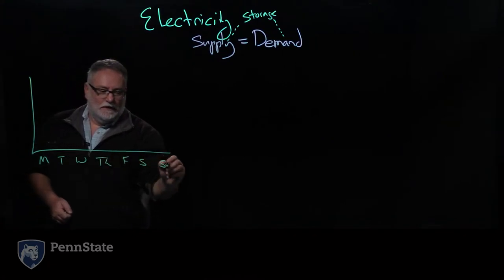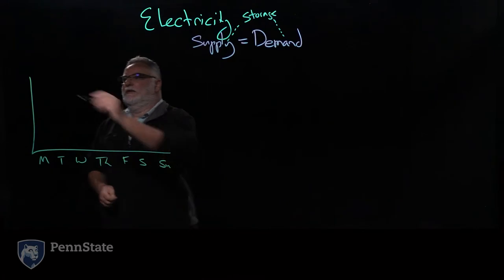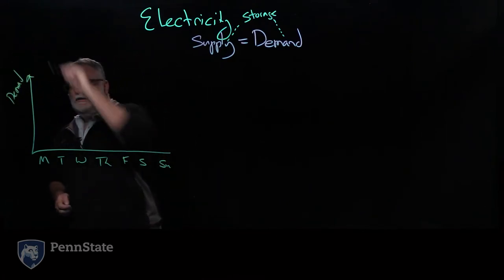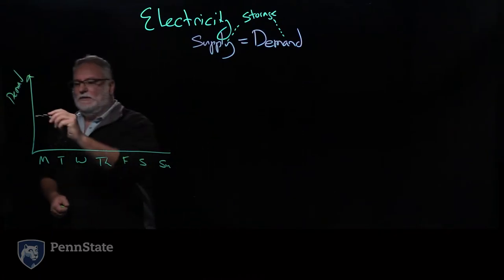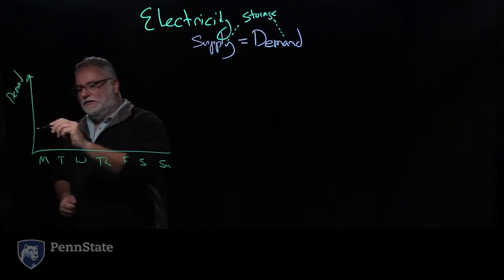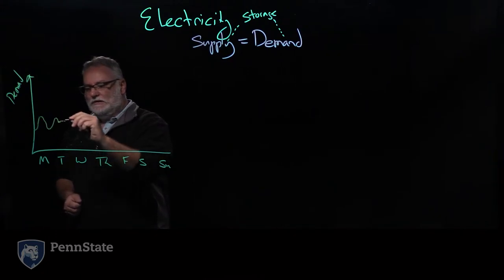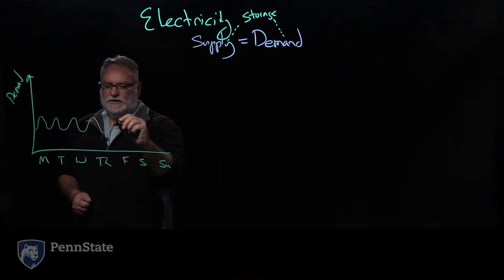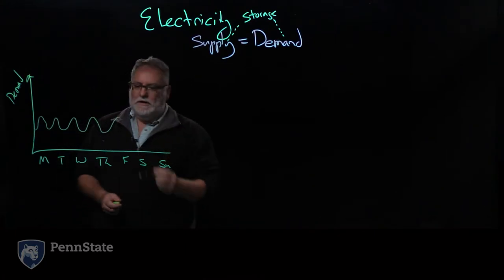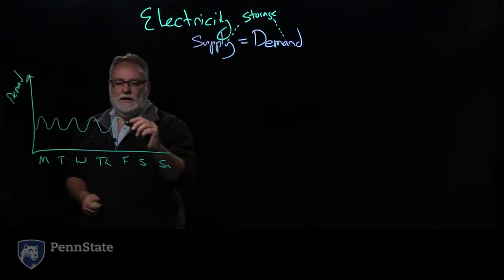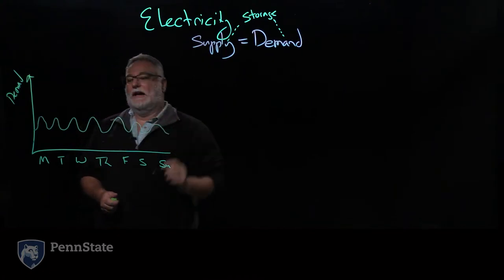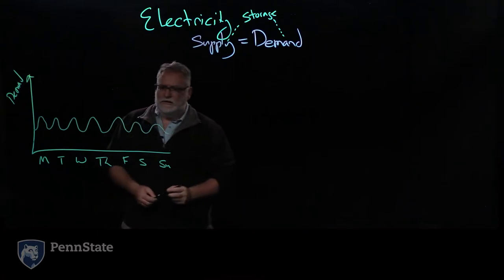What typically happens is at night we're using a little bit of electricity. I have these sort of weekly peaks. It might peak around 4 or 6 p.m. depending where you are, and then the weekend typically has a lower demand cycle along these lines.